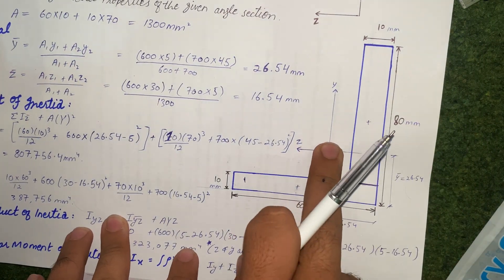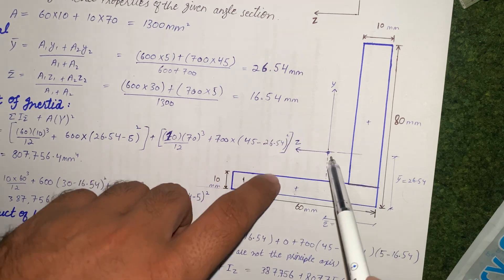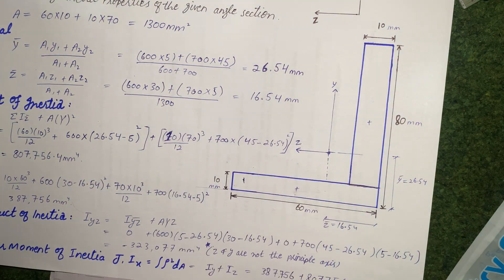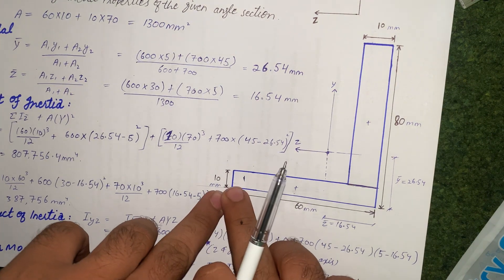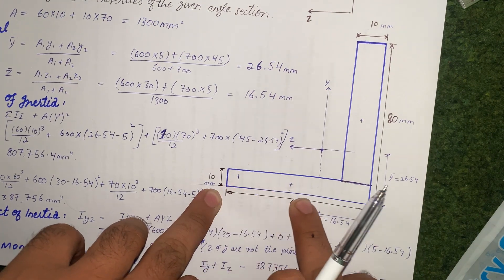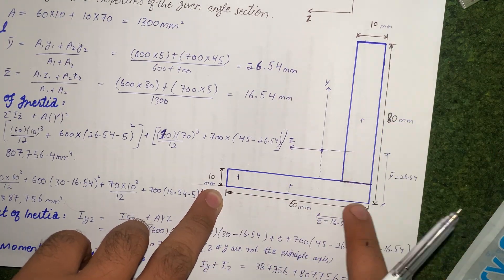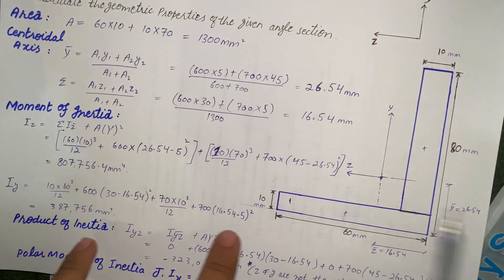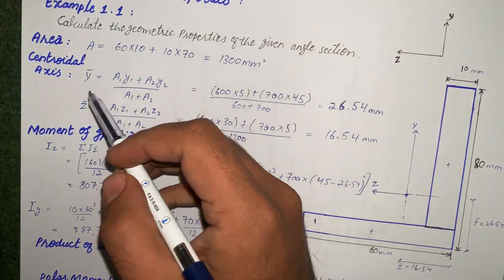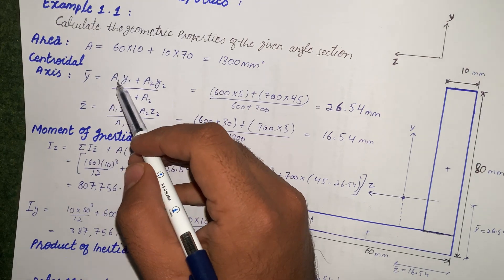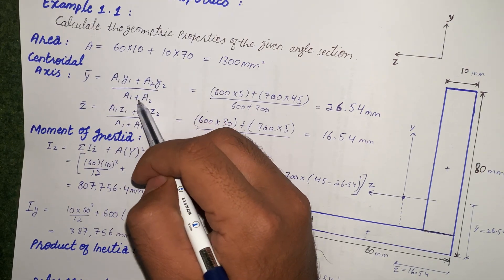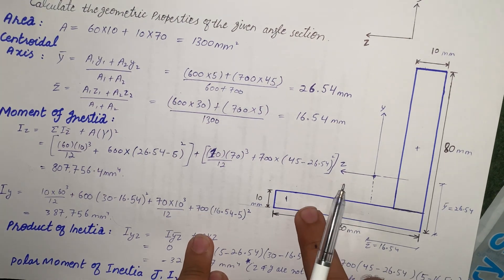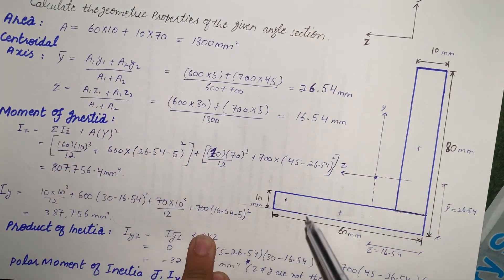Now we have to locate the centroid, which is not yet known. We use a reference axis z and y. From this reference axis we locate the centroid using the formula: ȳ = (A₁y₁ + A₂y₂) / (A₁ + A₂), where we have two rectangles.